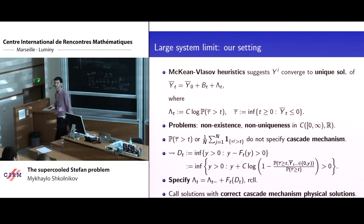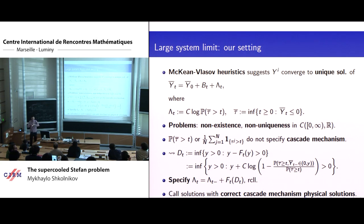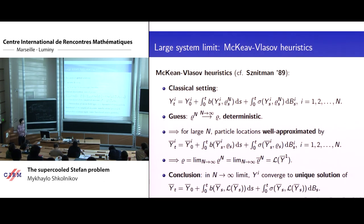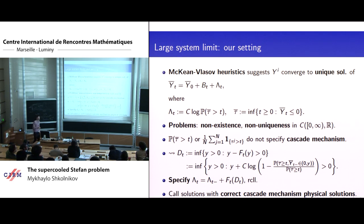If you believe in the McKean-Vlasov heuristic, you arrive at the following conjectured limit. A typical particle in a system with a large number of particles is supposed to behave as a Brownian motion — since particles are driven by Brownian motions. The empirical average of survival indicators should converge to the survival probability of a typical particle in the system. Up to this log, you arrive exactly at the probabilistic formulation of the supercooled Stefan problem. You can also build a similar particle system without the log, but the telescoping sum computation would become more complicated — for simplicity, I introduced this log.